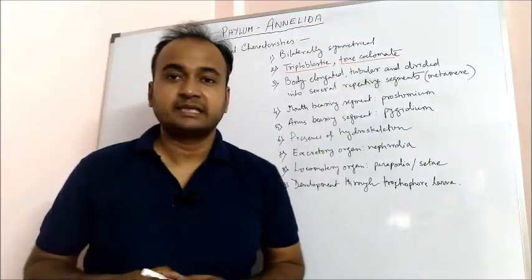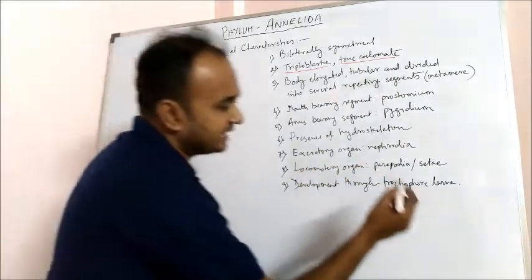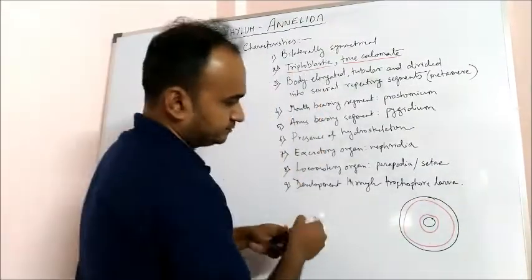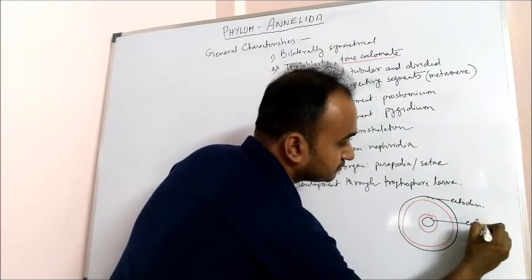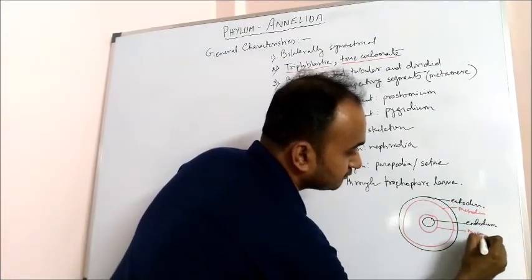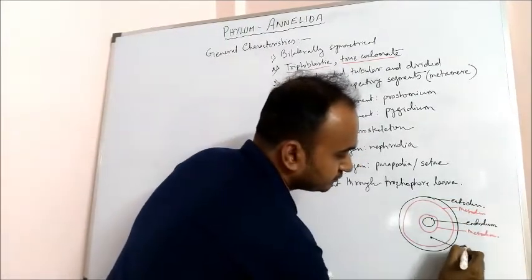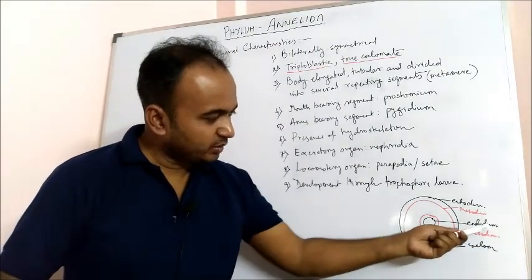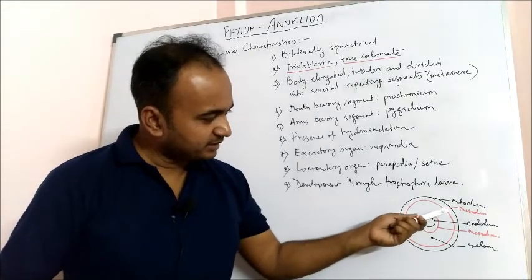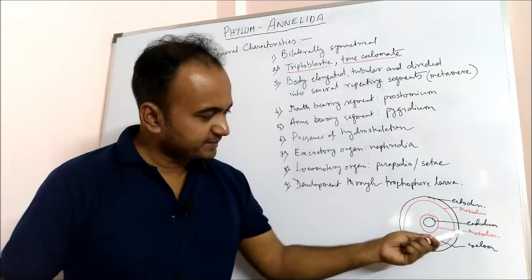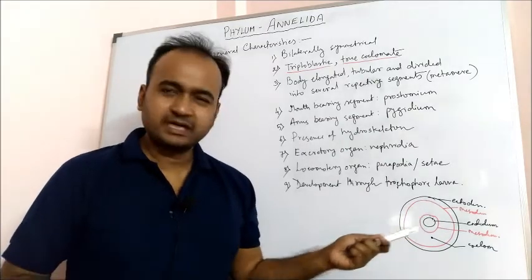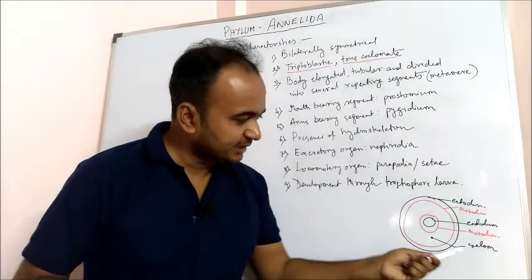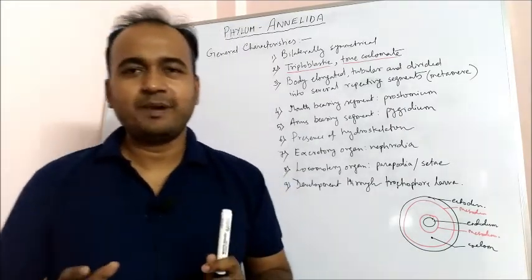Truecoelmate means their body layer arrangement consists of an outer ectoderm layer, an inner endoderm layer, and the mesoderm (shown in red). There are two mesodermic layers in a truecoelmate, and the coelom is totally bounded by these mesodermic layers.